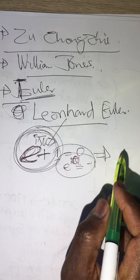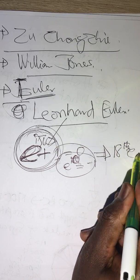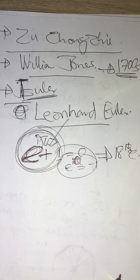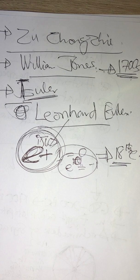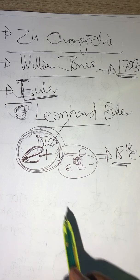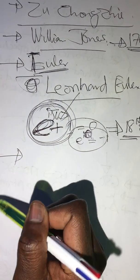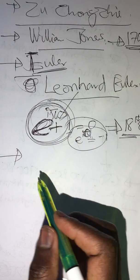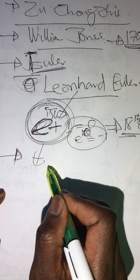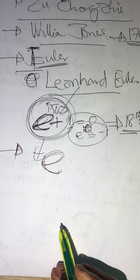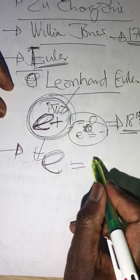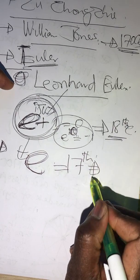This was in the 18th century. William Jones brought the idea of pi in the 1700s, and that is when pi came into existence. Euler actually made it more popular in the mathematics community, but before Euler, Jacob Bernoulli was also trying to do a lot of work behind the scenes.